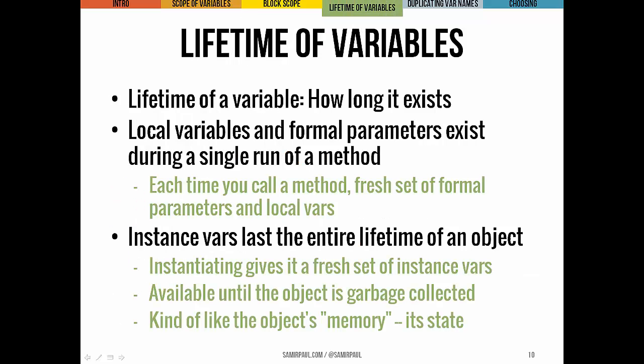`sum`, on the other hand, persists. That leads to the idea of the lifetime of a variable — how long does this variable exist. Local variables and formal parameters in a method only exist during that single run of the method, so every call gives a fresh set. Instance variables are persistent — they last the entire lifetime of an object, available every time we call a method. They're the object's memory. When an object gets garbage collected, that's when those instance variables get wiped.